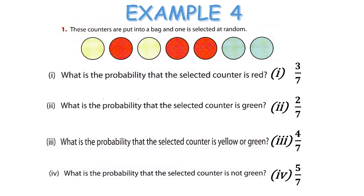Do you notice anything interesting about the answer to question 2 and question 4? That is not a coincidence. The probability of selecting green is 2/7 and the probability of selecting not green is 5/7. When you add them together you get 7/7, which is 1. And if you remember the probability scale, 1 was certain. So that's a nice little fact we'll explore more in second year.